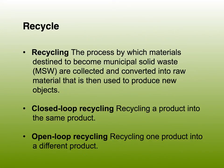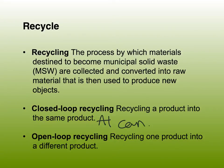Recycling: materials destined to become municipal solid waste are collected and converted into raw material that is then used to produce new objects. There are two types. Closed-loop recycling uses the exact same source products to make the exact same product. An example would be aluminum cans - you take the cans, recycle the aluminum, and it becomes a can again.